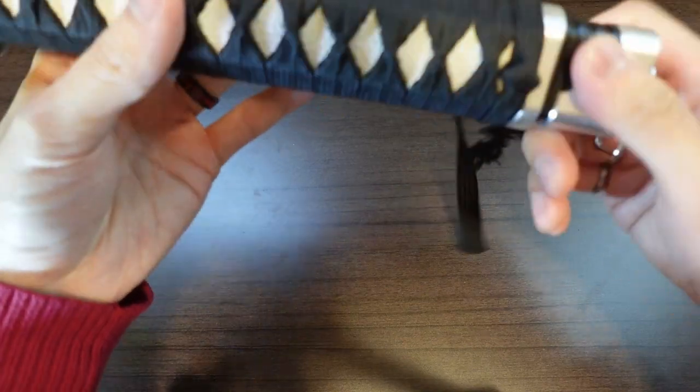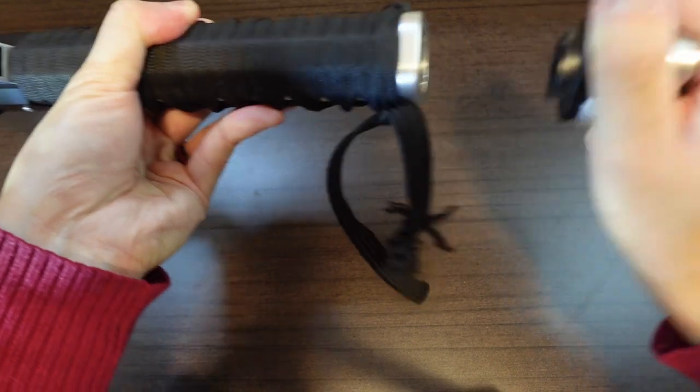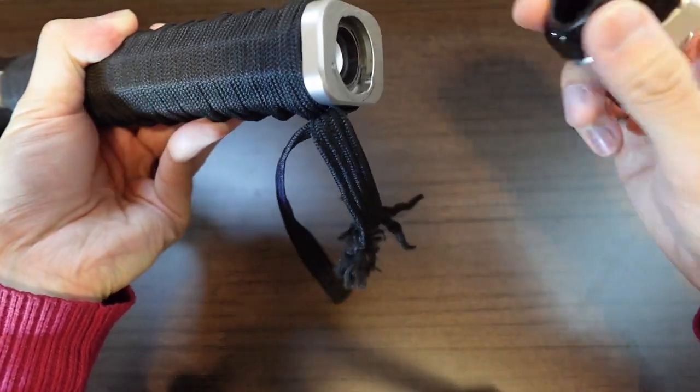So to access the chassis you want to rotate the pommel clockwise. There's kind of like a J-lock mechanism there which locks in place.